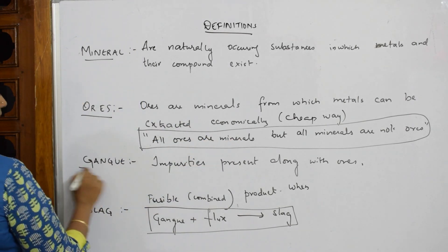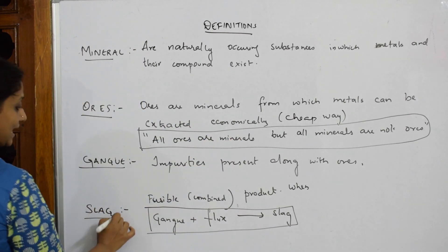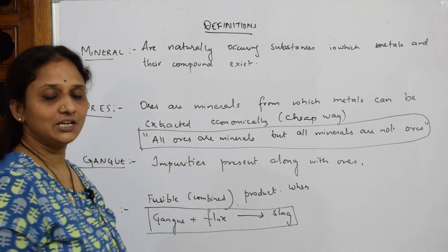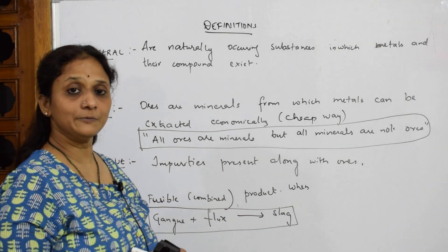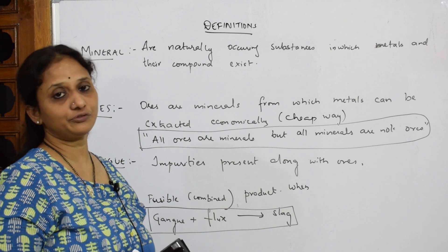Gangue is impurity. Slag is the combination of gangue and flux. So I'll meet you directly in the topic now - I'll be starting with extraction of iron.